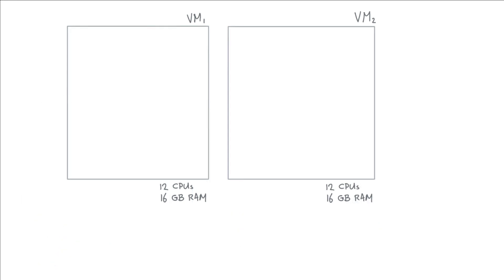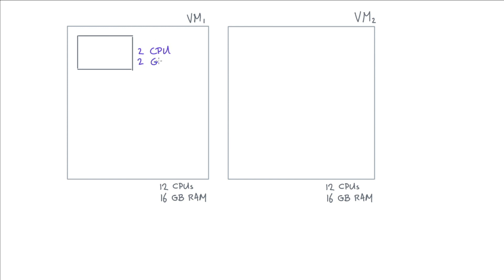Let's consider a simplified scenario where I only have two servers, VM1 and VM2. Let's say both virtual machines have 12 CPUs and 16 gigabytes of RAM each. One thing I could conceptually do is start thinking about ways of splitting those resources up — for example, creating a little bucket that uses two CPUs and maybe two gigabytes of RAM, and adding more buckets of different sizes.